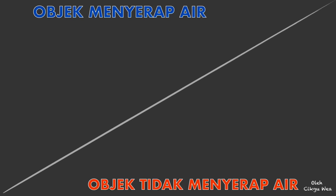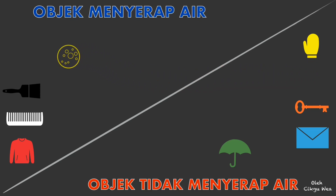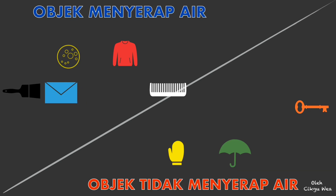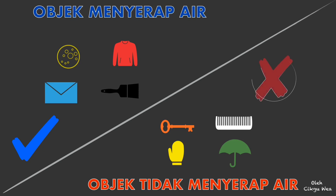Mari sama-sama kita kelaskan dalam kumpulan mengikut objek yang menyerap air dan juga objek yang tidak menyerap air. Kunci besi, sarung tangan getah, dan juga payung adalah objek yang tidak boleh menyerap air.